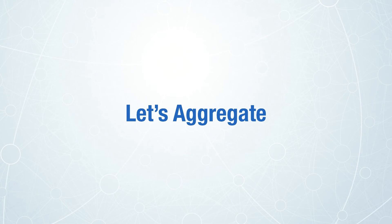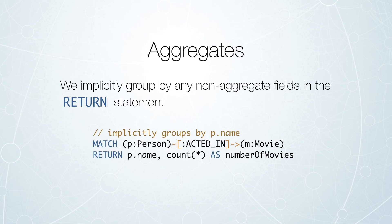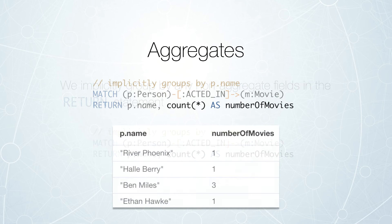Let's get into some aggregate functions as your next step on your journey. If you are already a SQL developer, you might want to understand the difference between how Cypher handles aggregates and how SQL handles aggregates. The main difference is that in Cypher, you do not need to specify a grouping key. The grouping key is implicitly specified by any non-aggregate fields in the return statement. Here, we're grouping by name and counting the number of movies that each particular actor acted in.